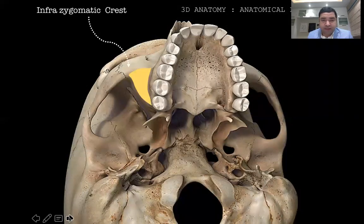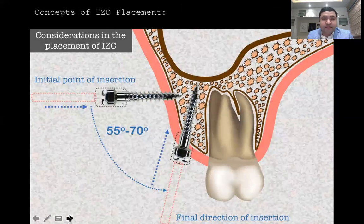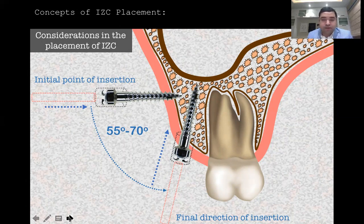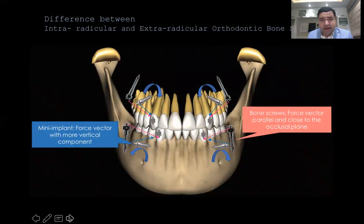These bone screws are basically placed in the infrazygomatic crest because anchorage loss is more common in the maxillary arch. There could be the Linx and the Nuse method of placement — that's a personal choice of the clinician as to where you want to place it, beside the second molar or the first molar. There are various considerations to IZC placement including initial insertion angulation, placing the driver parallel to the roots of the first or second molar, so that full arch distalization can happen. The bone screws are better suited for retreatment cases specifically because of the force vector and biomechanics — they give a more parallel force rather than a posterior intrusive force, as is common with mini-screw implant cases.